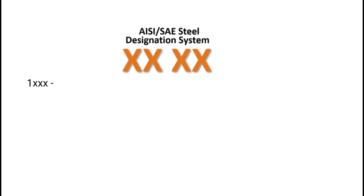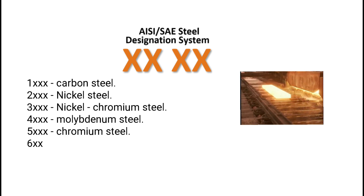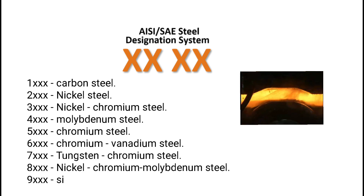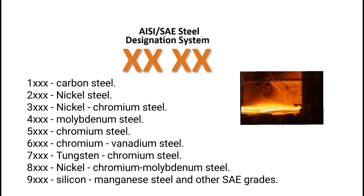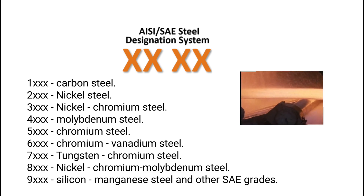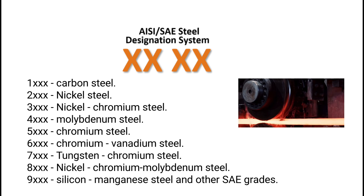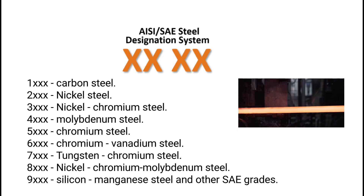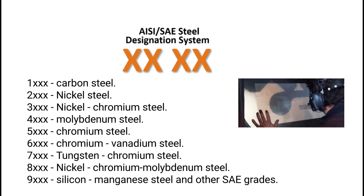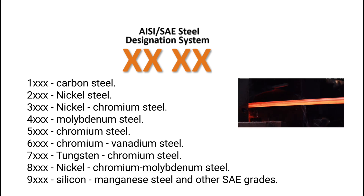The steels are classified as follows: 1xxx carbon steel, 2xxx nickel steel, 3xxx nickel-chromium steel, 4xxx molybdenum steel, 5xxx chromium steel, 6xxx chromium-vanadium steel, 7xxx tungsten-chromium steel, 8xxx nickel-chromium-molybdenum steel, and 9xxx silicon-manganese steel and other SAE grades.